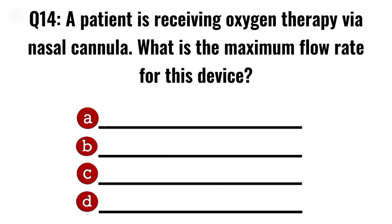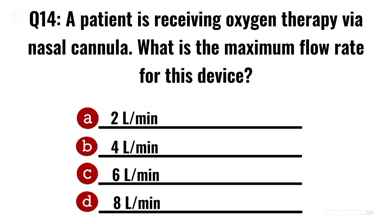Question 14. A patient is receiving oxygen therapy via nasal cannula. What is the maximum flow rate for this device? Correct option C: 6 litres per minute.